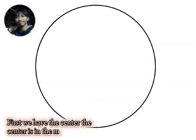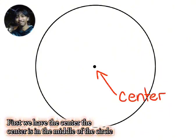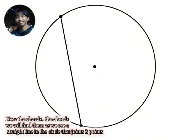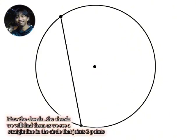First, we have the center. The center is in the middle of the circle. Now the chords. We will find them as we see a straight line in the circle that joins two points.